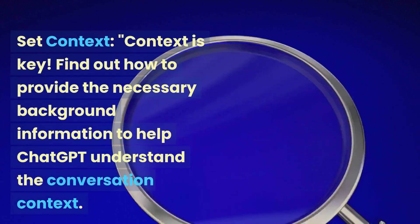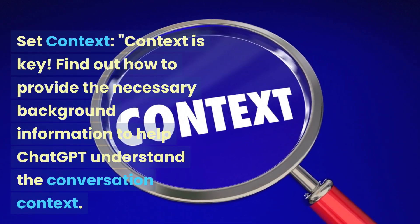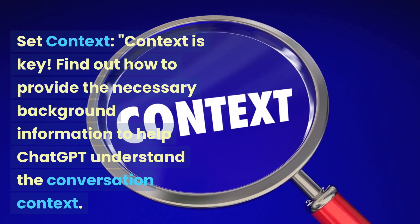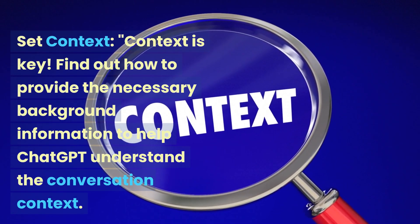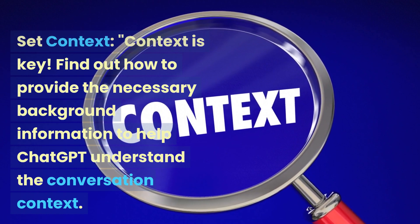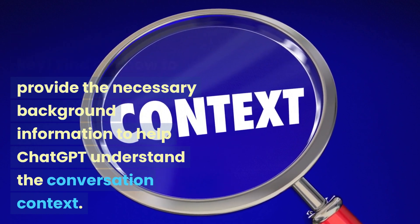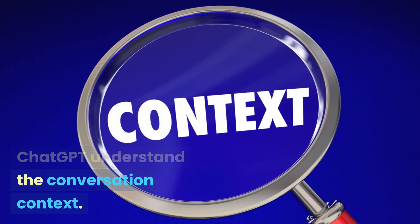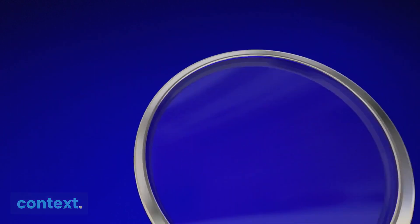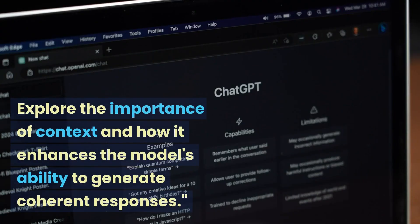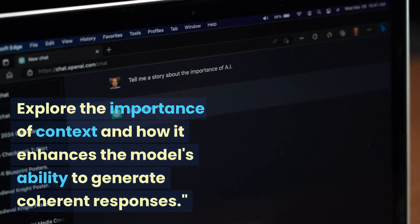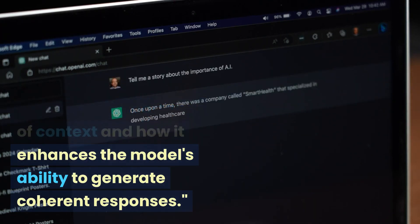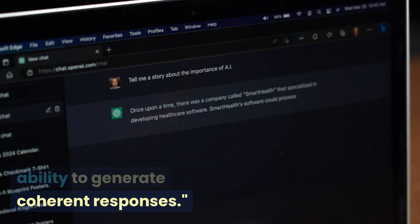Set context. Context is key. Find out how to provide the necessary background information to help ChatGPT understand the conversation context. Explore the importance of context and how it enhances the model's ability to generate coherent responses.